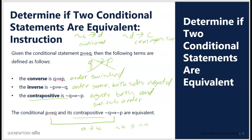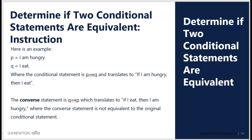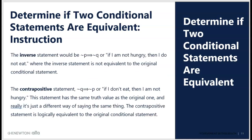Here's an example. If I am hungry, then I eat — if P then Q. The converse would be: if I eat, then I am hungry. It's not equivalent. The inverse would be: if I am not hungry, then I do not eat. That might make sense, but it's still not equivalent — the second and third rows would be different. The contrapositive is: if I don't eat, then I am not hungry. This is the one that is equivalent. I switched sides and negated each — neither were negated originally, so now they are both negated.